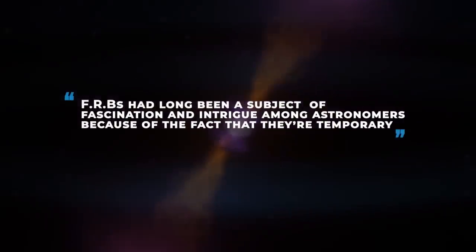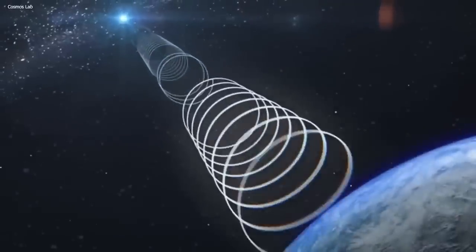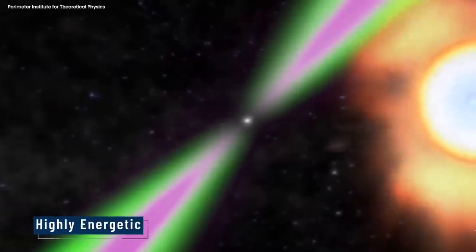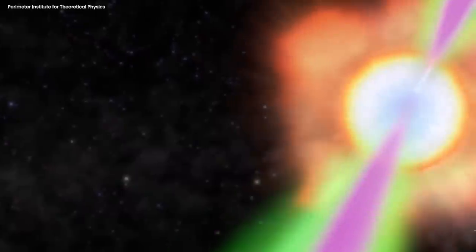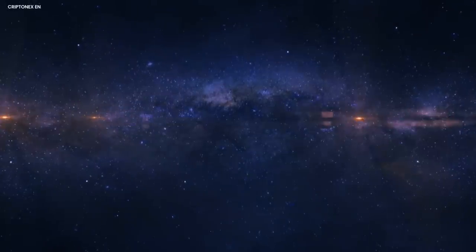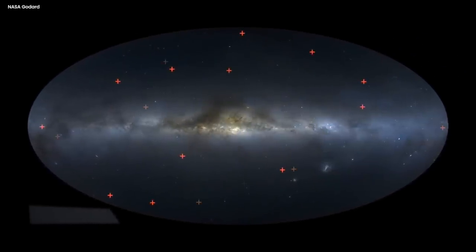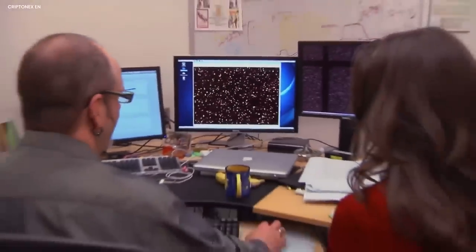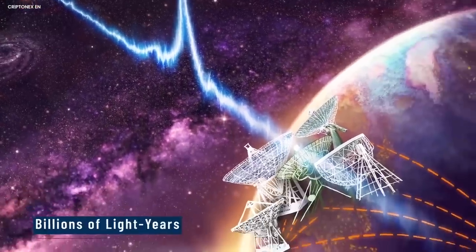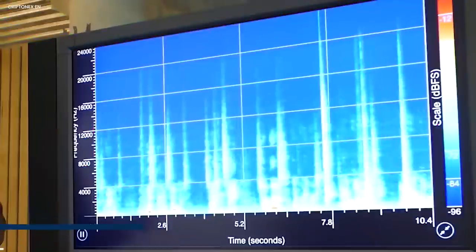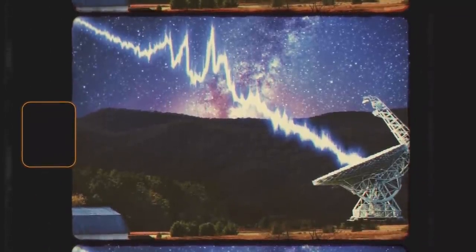FRBs had long been a subject of fascination among astronomers because they're temporary. They are extremely brief bursts of radio waves lasting only a fraction of a second, yet highly energetic, releasing as much power in a few milliseconds as the sun does in years. Once an FRB is detected, it's challenging to predict when or where the next one will occur, making them difficult to study in real time.